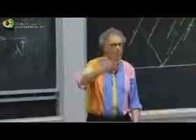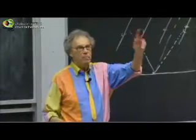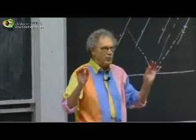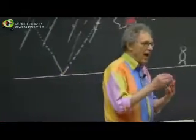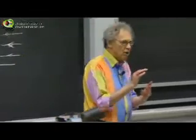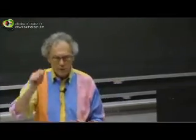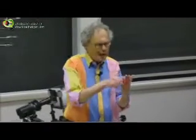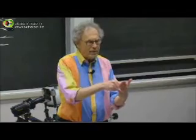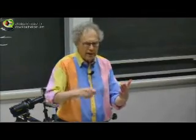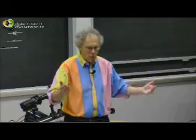The book signing will start now — you can buy books in the hall and come down. I have one request: put a piece of paper in the book and write down, in very clear letters, to whom I should address the book. If it's for your daughter Emily, write 'for Emily' — even though your name may be Peter. I will write 'for Emily' and sign Walter Lewin. If you don't put in a piece of paper, it's going to take so long.